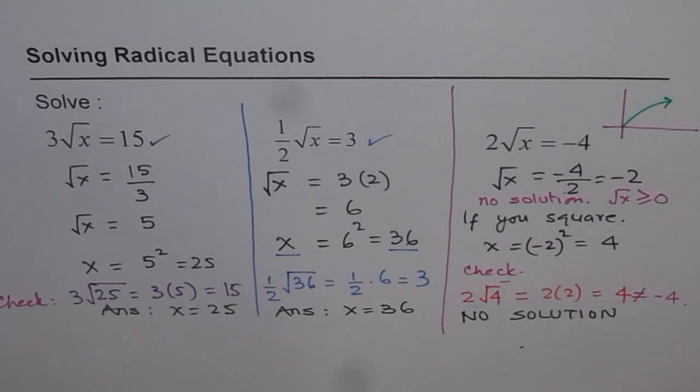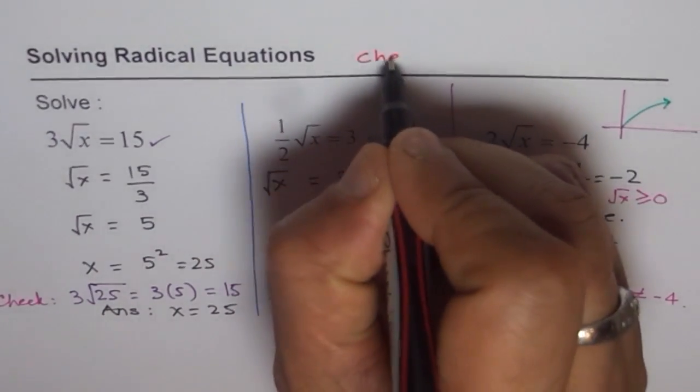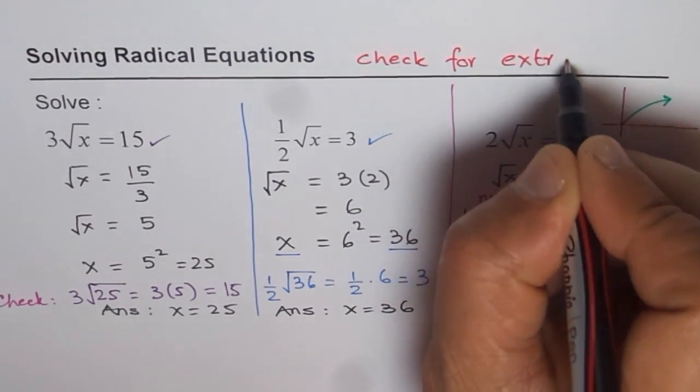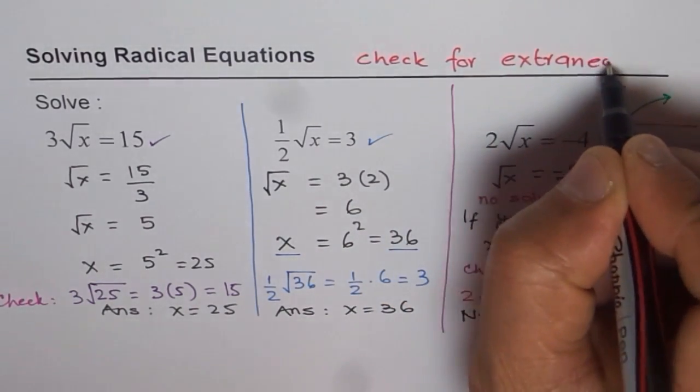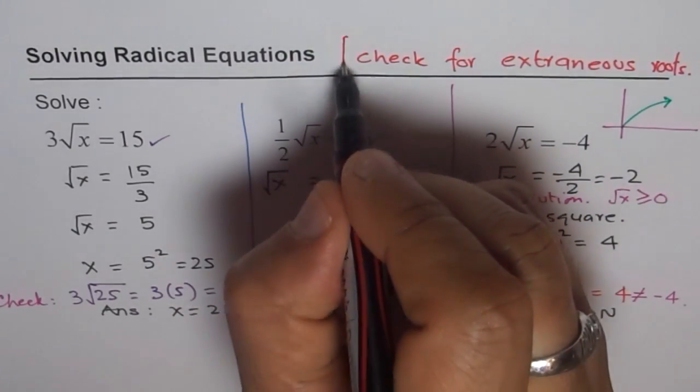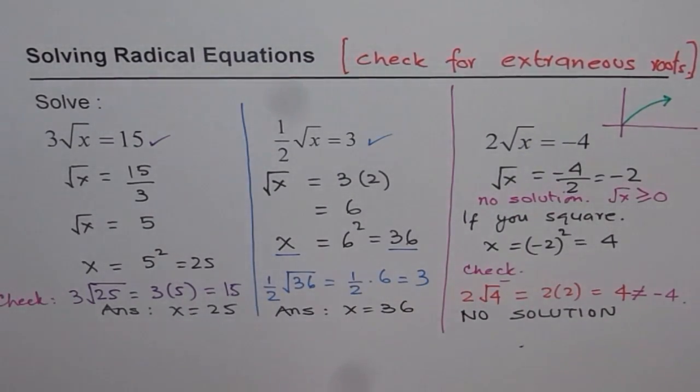But that brings us to a very important part of solving radical equations. And that is, we always have to check for all the roots. So whenever you are doing radical roots, you can expect extraneous roots. So check, that is kind of critical whenever you are solving radical equations. So remember that part.